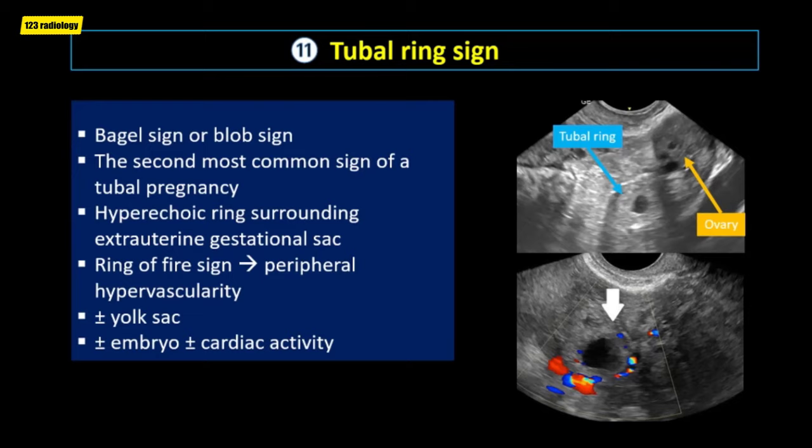The tubal ring sign, also referred to as bagel sign or blob sign, is one of the ultrasound signs of a tubal ectopic pregnancy and is the second most common sign of tubal pregnancy. It describes a hyperechoic ring surrounding an extrauterine gestational sac. A related finding is the ring of fire sign, recognized by peripheral hypervascularity of the hyperechoic ring. This echogenic ring may contain a yolk sac or embryo with cardiac activity.